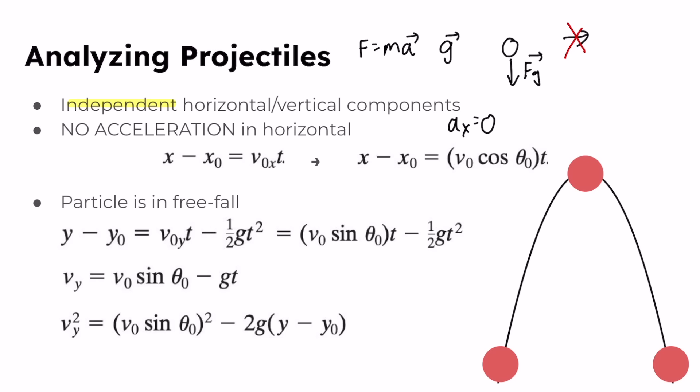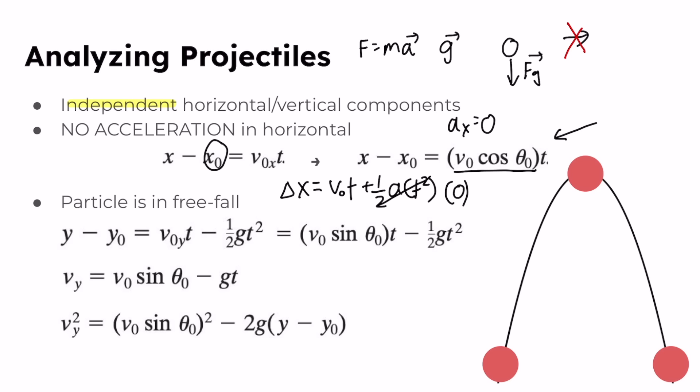Since ax = 0, we can write the projectile's horizontal displacement from an initial position x naught. Looking back at the kinematic equations — specifically delta x = v naught times t + one-half a times t squared — if the horizontal acceleration is zero, the second term vanishes, giving us delta x = v initial times t. Since v initial in the x direction equals v initial times cosine of theta initial, we can substitute that in to get the equation for horizontal displacement.